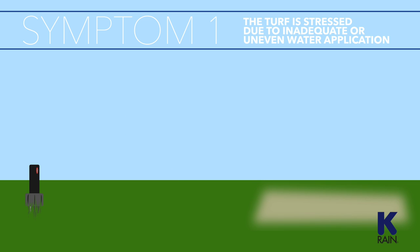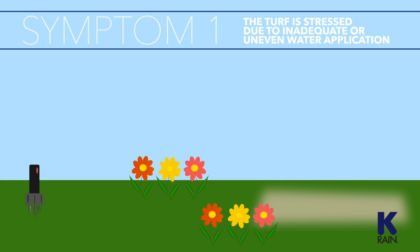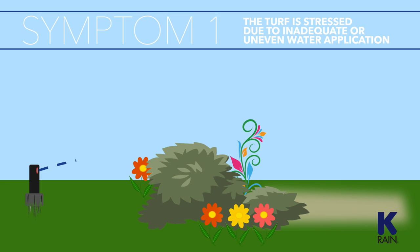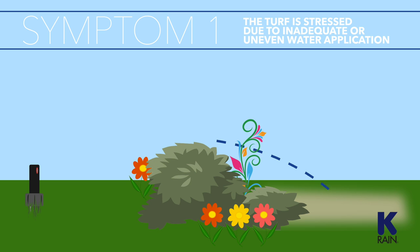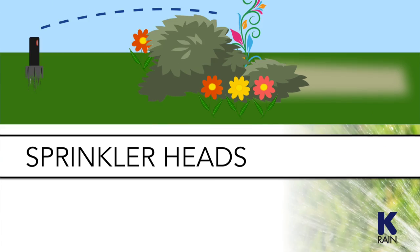Another potential problem is a change in landscaping that causes the original design to become ineffective. This can happen if new landscaping has been installed or if plant growth has caused obstructions not foreseen in the original design. A solution can be as simple as adding an extension to a spray head to help it reach over the top of a shrub. Sometimes you will need to move sprinkler heads to address the issue.